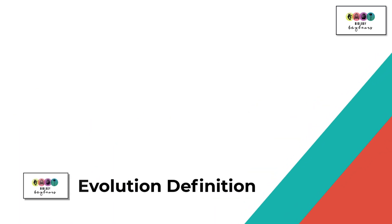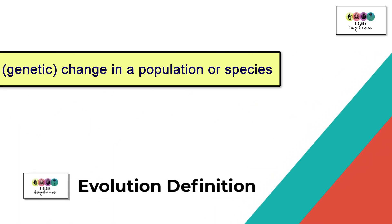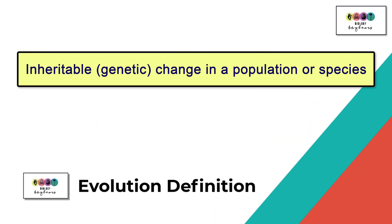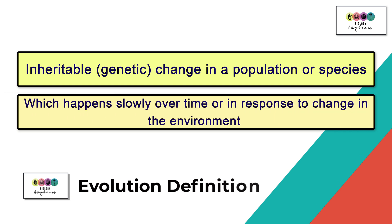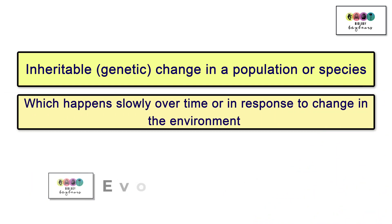The first place to start is with the definition of evolution. It's an inheritable genetic change in a population or species which happens slowly over time or in response to change in the environment.